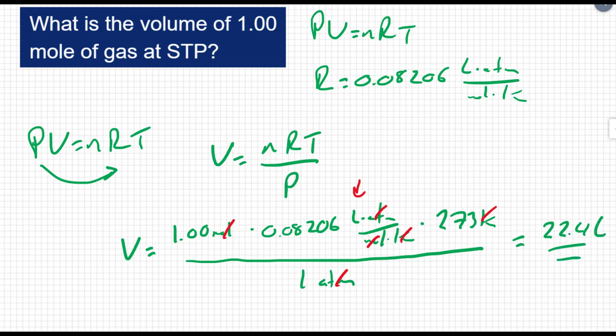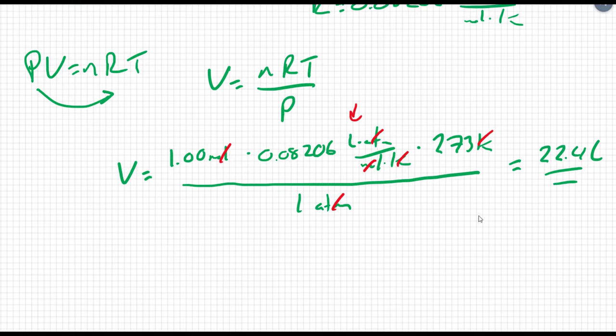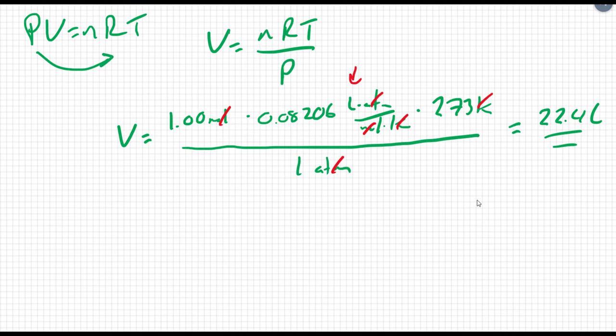And that's true for any gas at STP. One mole of any gas will have a volume of 22.4 liters. Because that comes just straight from the ideal gas law. So this will be a helpful number in the future. If you're at STP, one mole of gas will be equivalent to 22.4 liters.